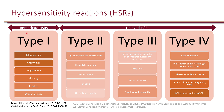Type 1 is the immediate hypersensitivity reaction — within an hour — mediated by IgE (immunoglobulin E). This can manifest as serious reactions including anaphylaxis, angioedema, flushing, pruritus, urticaria, and hives.